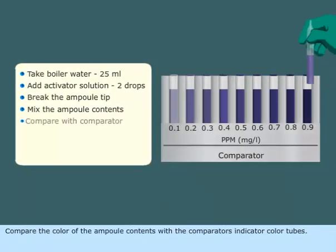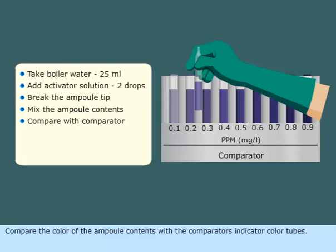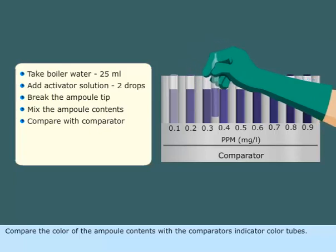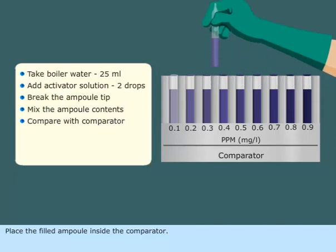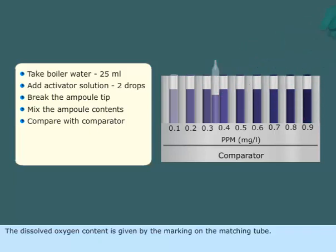Compare the color of the ampoule contents with the comparator's indicator color tubes. Place the filled ampoule inside the comparator. The dissolved oxygen content is given by the marking on the matching tube.